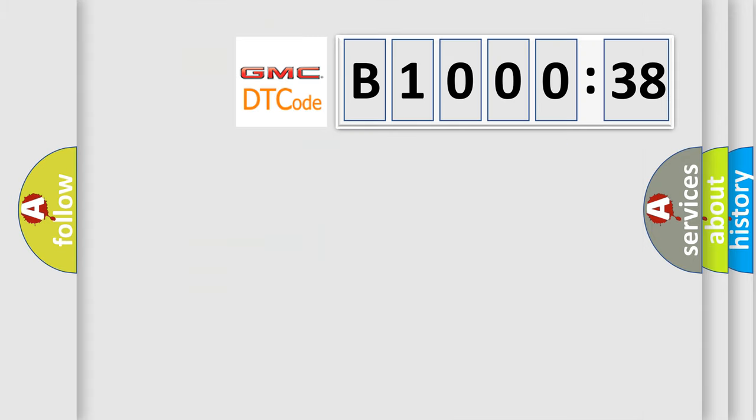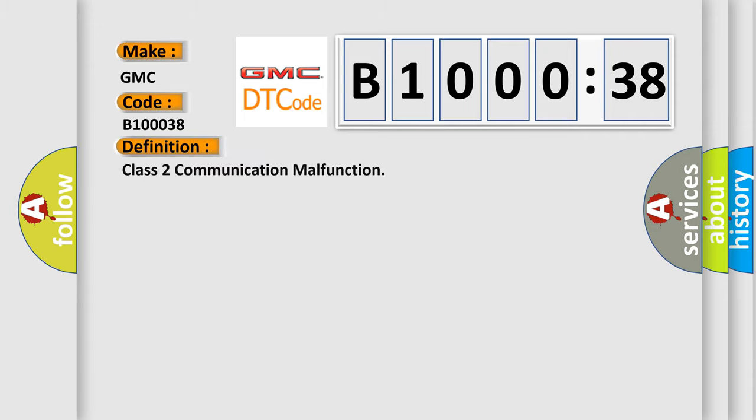So, what does the diagnostic trouble code B100038 interpret specifically for GMC car manufacturers? The basic definition is class 2 communication malfunction. And now this is a short description of this DTC code.